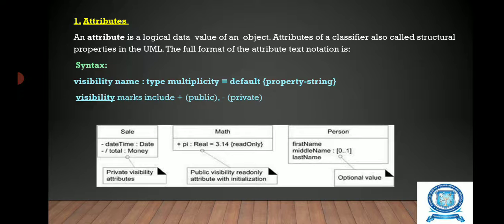First let us see about attributes. An attribute is a logical data value of an object. Attributes of a classifier are also called structural properties in the UML. The full format of the attribute text notation has a syntax like visibility name, type, multiplicity equal to default property string. The visibility marks include public represented by plus, and private attribute represented by minus.